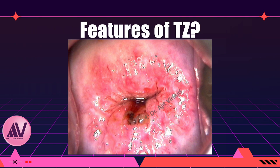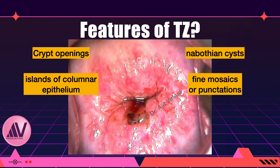What are the features of a transformation zone? The transformation zone may have any of the features of metaplasia such as crypt openings, Nabothian cysts, islands of columnar epithelium, fine mosaics or punctations, and aceto-white epithelium. Remember, mature metaplastic epithelium is often aceto-white and is difficult to distinguish from low-grade pre-malignant lesions. Aceto-white patches due to metaplasia are centripetal — going towards the external os — but can sometimes be centrifugal, spreading away from the external os.